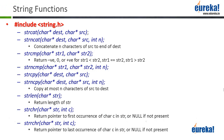Then you have strchr, which searches for a character c in your string str and returns a pointer to the first occurrence of that character. Similarly, you have strrchr, which does the reverse search — it searches for the character c in string str but goes in reverse order, meaning it will point to the last occurrence of the character c in the string.